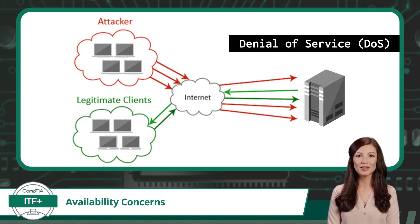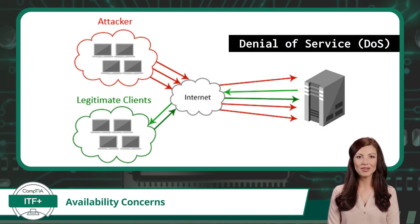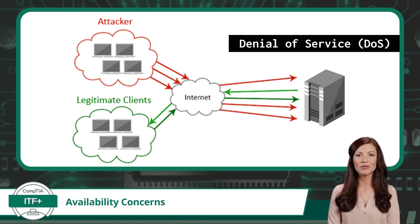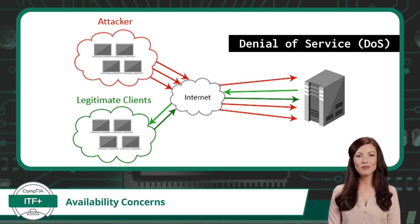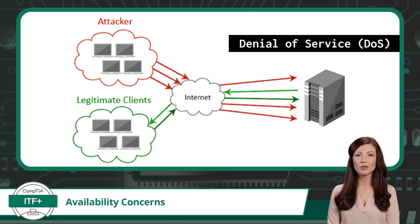As for our last availability concern, we have to be wary of denial-of-service, or DoS attacks. A DoS attack is a malicious attempt by attackers to overwhelm a system, service, or network with an excessive amount of traffic, rendering it inaccessible to legitimate users. The primary aim is not to steal information but to disrupt the service, causing downtime and potential financial or reputational damage. These attacks work by flooding the target with bogus requests, making it difficult for the system to respond to legitimate traffic.